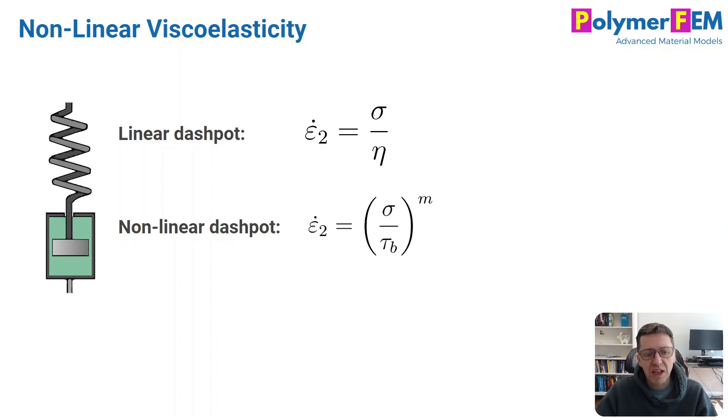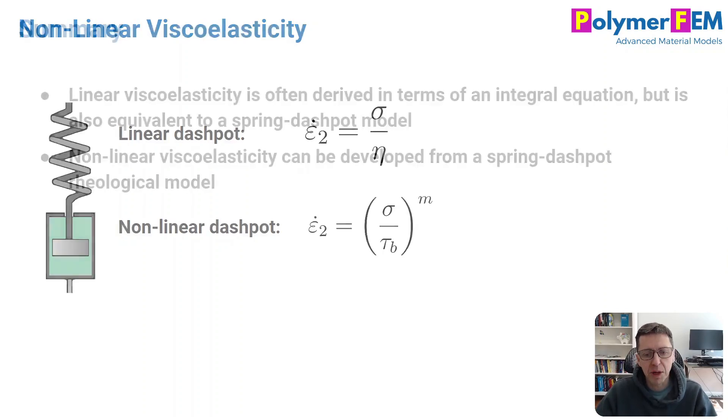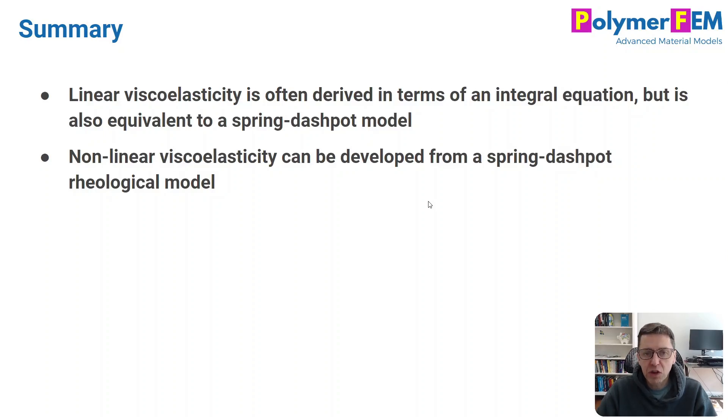So yes, using this simple generalization of the linear viscoelastic model in terms of the flow equation can give you very interesting and powerful results. So to summarize, linear viscoelasticity I initially derived as an integral equation from Boltzmann's superposition idea, but you can also do it in terms of springs and dashpots. And both of them are equally valid, and both of them are useful to understand. And secondly, nonlinear viscoelasticity is easy to extend from the rheological model. So that's another useful feature of this kind of approach. If you have any questions on this, you can ask them below.